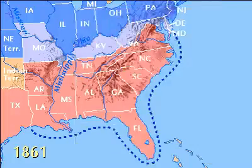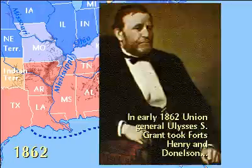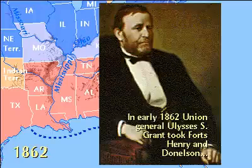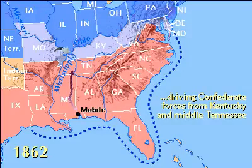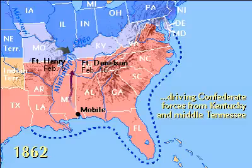To the West, in February 1862, the Union had better luck when Union General Ulysses S. Grant took Forts Henry and Donaldson, driving the Confederates from Kentucky and Central Tennessee.